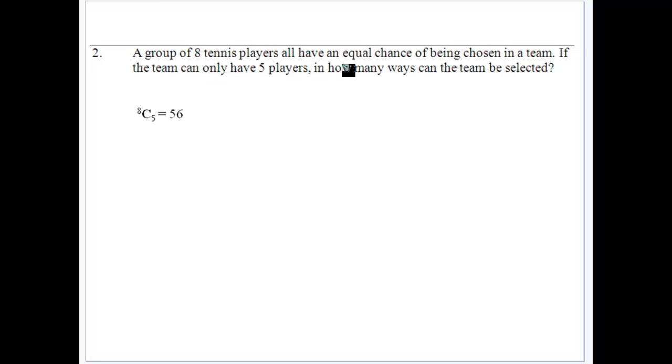A group of eight tennis players all have an equal chance of being chosen for a team. Team can only have five players. How many ways can the team be selected? So we've got eight people and we've got five. How many groups of five can we get from the eight? There's 56 different ways because it's 8C5 notation. Again, order doesn't matter. It doesn't matter whether you get selected first or you get selected fourth. If you're in the group, you're in the group.